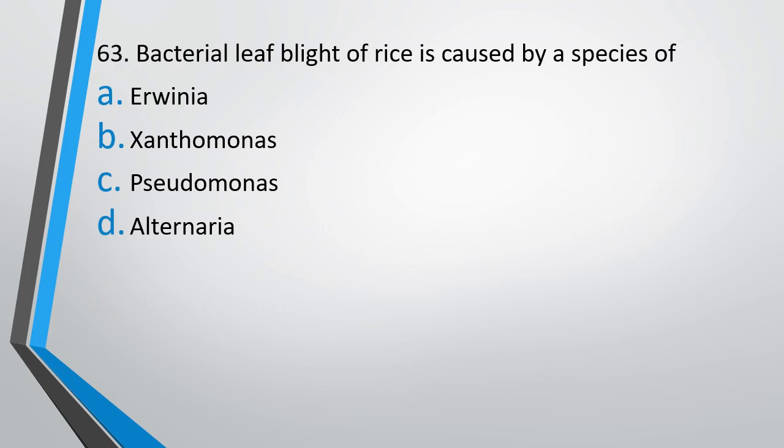Question number 63. Bacterial leaf blight of rice is caused by species of: option A — Erwinia, option B — Xanthomonas, option C — Pseudomonas, or option D — Alternaria? The correct answer is option B, that is Xanthomonas.